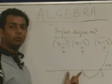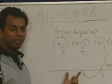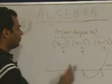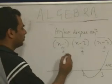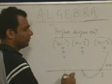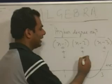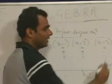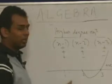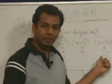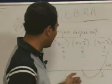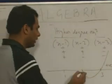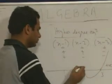Similarly, take any value between 1 and 2 — let us say 1.5. Then (1.5 minus 1) is positive, (1.5 minus 2) is negative, (1.5 minus 3) is negative. So positive into negative into negative gives a positive value, and the graph is above the line.